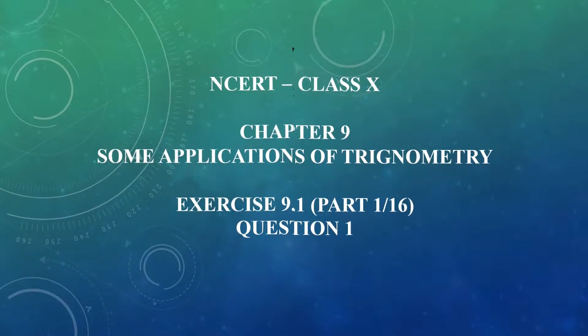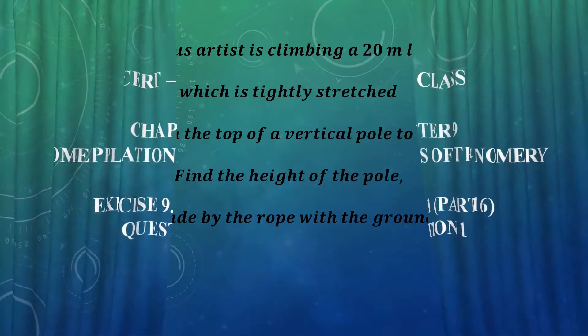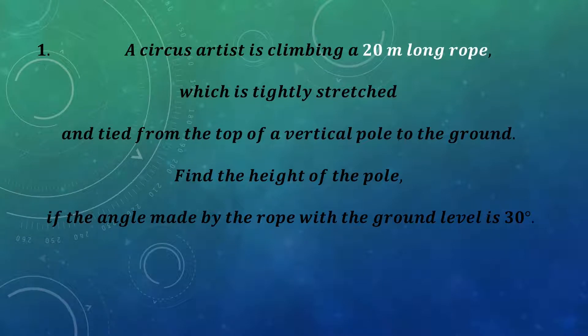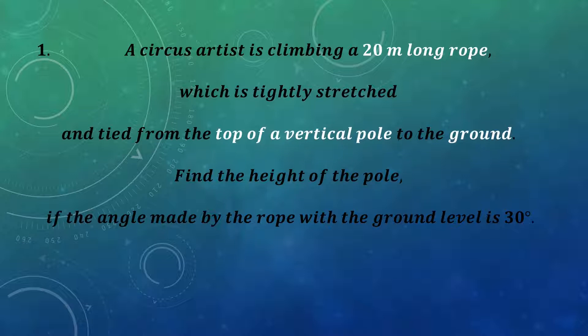Question 1 states that a circus artist is climbing a 20 meters long rope which is slightly stretched and tied from the top of a vertical pole to the ground. Find the height of the pole if the angle made by the rope with the ground is 30 degrees.